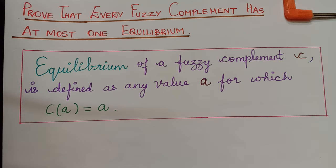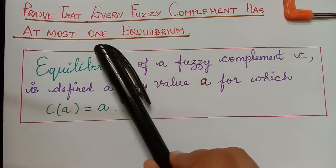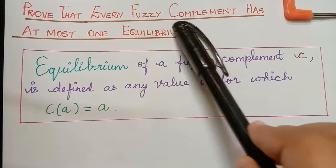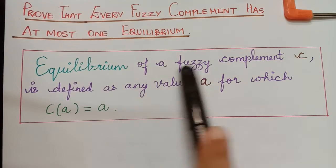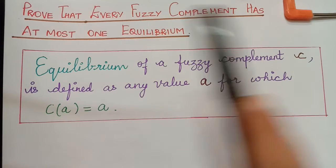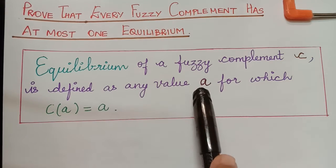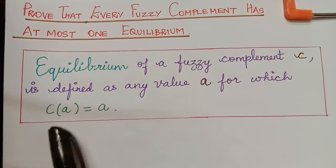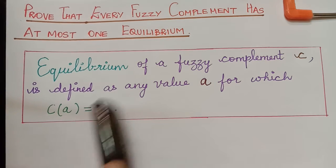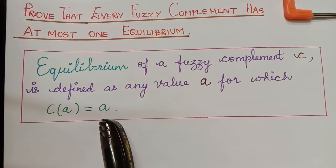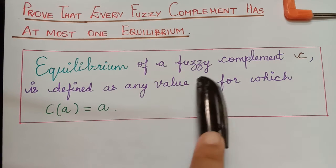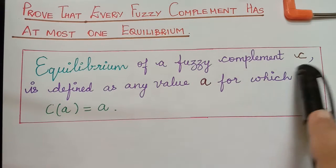Hello students. We shall now prove that every fuzzy complement has at most one equilibrium. To prove this, first we should know what is an equilibrium. The equilibrium of a fuzzy complement C is defined as any value A for which C of A is equal to A — that is, the complement of that particular value is the value itself. In that case, this value is said to be an equilibrium of the fuzzy complement C.